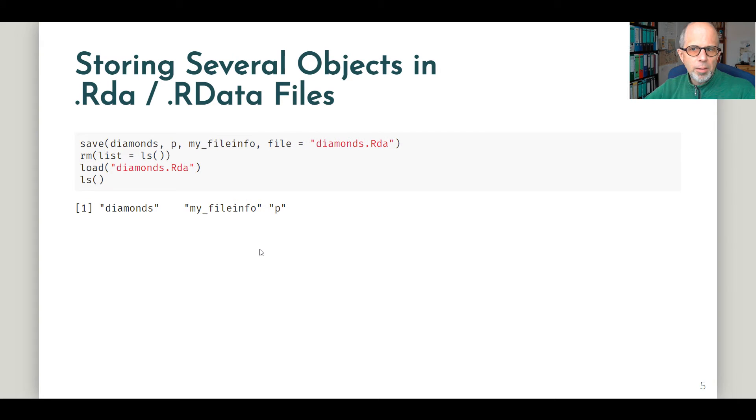Okay, what is special about this .rda and .rdata object type? We can store several objects in one file. For example, here I store the dataset. P was the plot that we created, a ggplotly object. And also this custom function, my_fileinfo. I can just add these up and store them in the diamonds.rda file.